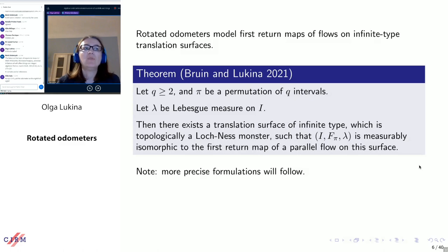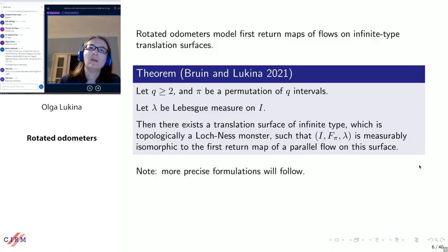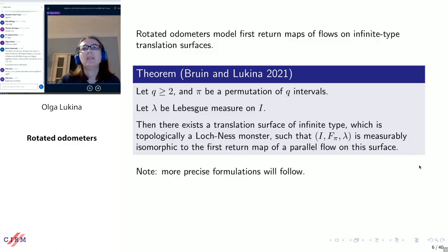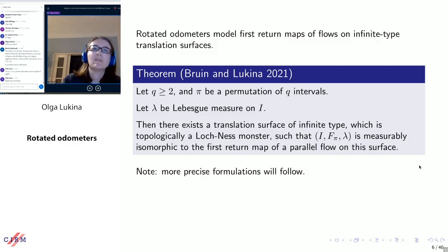A few words about motivation. I said that the rotated odometer models first return maps of flows of rational slope on certain translation surfaces. What I mean by model is that there is a measure-theoretical isomorphism between these systems. So given a rotated odometer, I can always find a surface which has interesting topological properties — namely, it's a Loch Ness monster — such that the flow of rational slope is measure-theoretically isomorphic to my rotated odometer system.